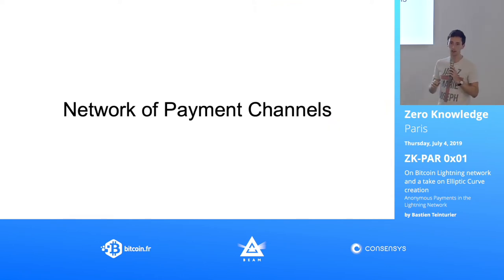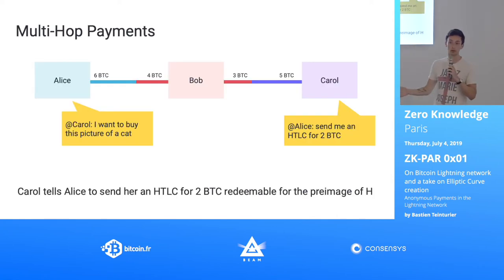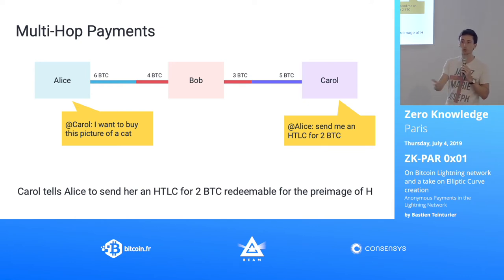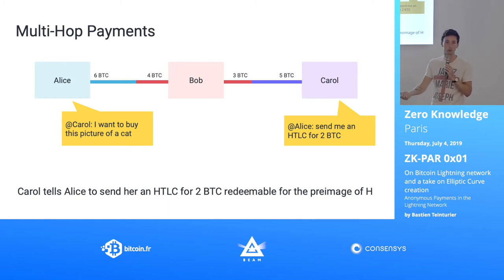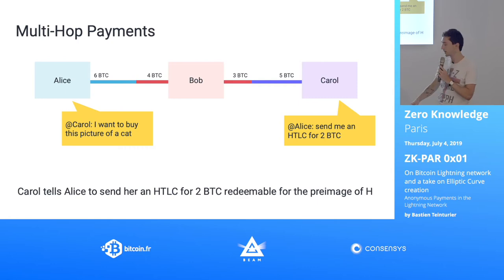Now that we have payment channels, they're just between two people. They're not very useful if you want a full network where everyone can send money to everyone. The idea is that if Alice has a channel to Bob and Bob has a channel to Carol, you want Alice to be able to pay Carol — it wouldn't make sense to have to open a channel with everyone you want to pay, like every Starbucks or grocery store.